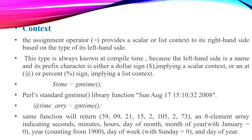For example: @time = gmtime(). This array is created by the gmtime function, which returns a nine-element array indicating seconds, minutes, hours, day of month, and month of year.